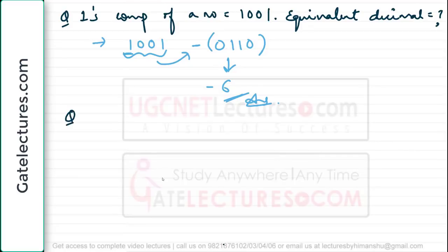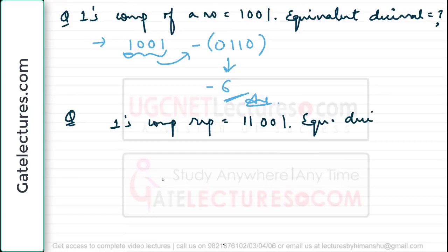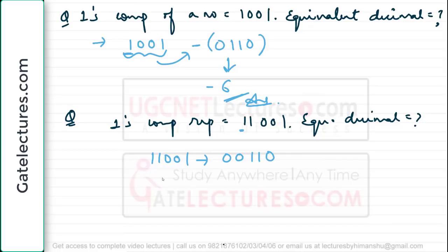Try one more similar question. The 1's complement representation is given as 11001 — what is the equivalent decimal? Since MSB is 1, this is a negative number. Perform 1's complement: you get 00110, which is 6. So the answer is again minus 6. The point being proven here is: if you have to extend the number of bits, you can repeat the sign bit as many times as you want by appending 1's at the MSB — it will not affect the number.